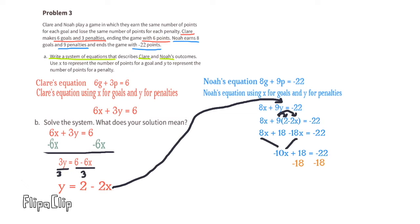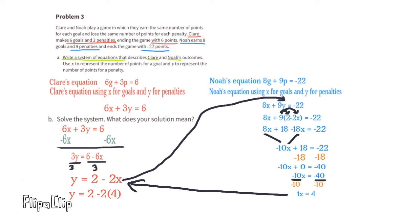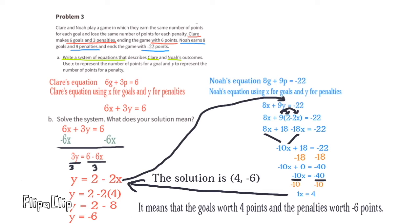Subtract 18 from both sides of the equal sign. Divide both sides by negative 10. And we discover that 1X equals 4. So now we can substitute the X in Claire's equation with a 4. Now the equation reads Y equals 2 minus 2 times 4, or Y equals 2 minus 8. And now we know that Y equals negative 6. The solution for the system is X value 4 and Y value negative 6. And this means that each goal is worth 4 points and each penalty is worth negative 6 points.